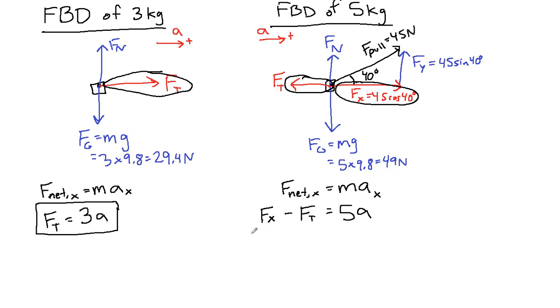We can do one more step before we pause momentarily, and I'm going to go ahead and get the number value for this 45 cosine 40 degrees. 34.5 Newtons.